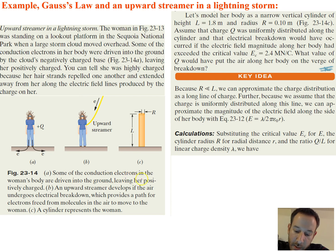So it's giving you an explanation of the pictures. In A, they're just showing that some of the conduction electrons in a woman's body are driven to the ground. In picture B, an upward streamer develops if the air undergoes electrical breakdown, which provides a path for electrons freed from molecules in the air to move to the woman. So you have this electrical breakdown of electrons coming towards her. And then part C, we're going to represent the woman as a cylinder because that just makes it easier.